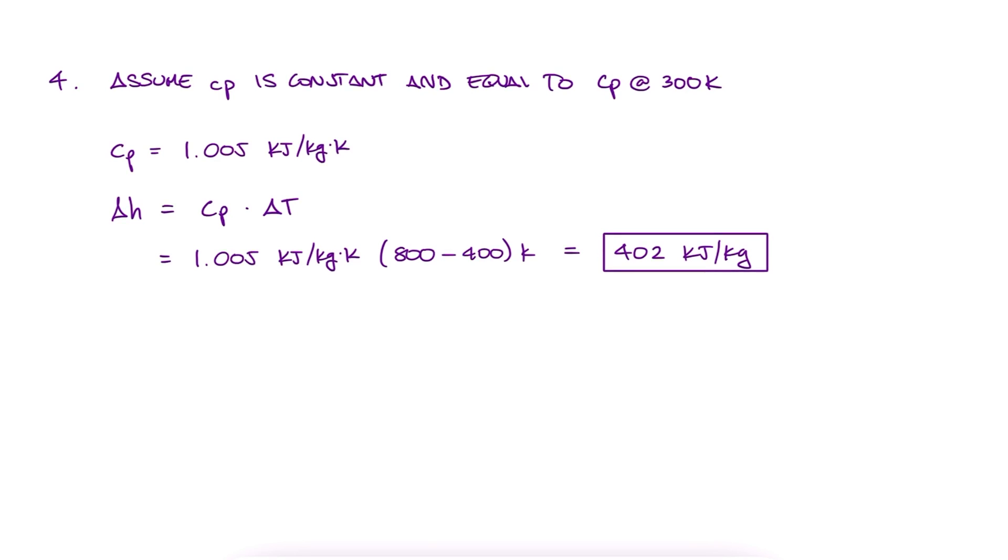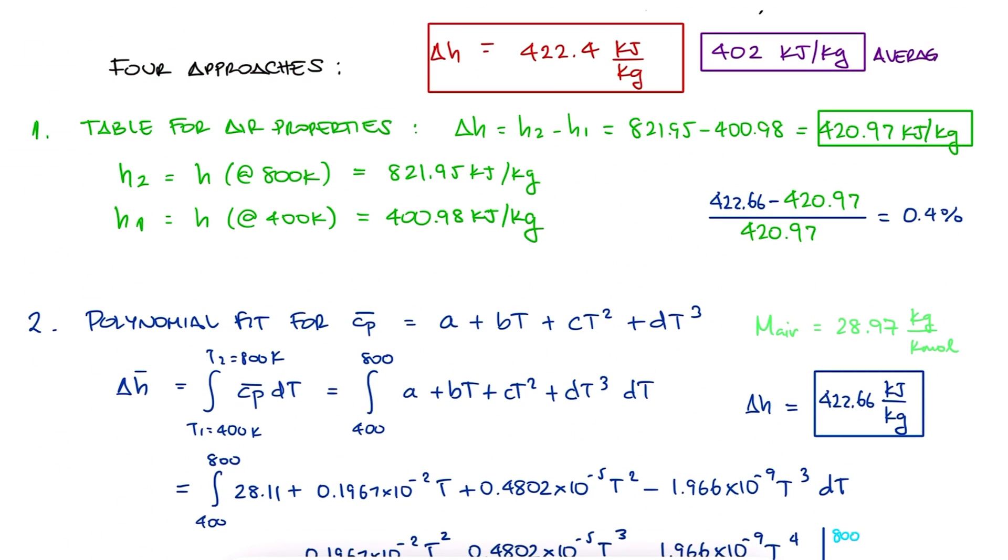So the conclusion to this example is to always use the tables for the exact enthalpy of our substance at that temperature if available. It's the easiest process and the most accurate. If that is not available, then use A, B, C, and D for the polynomial fit and perform the integral version of the expression for enthalpy.